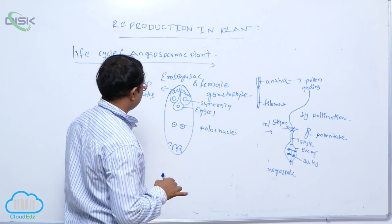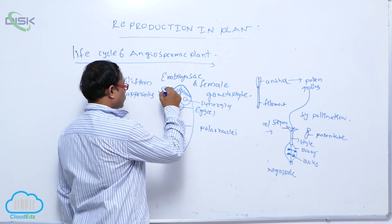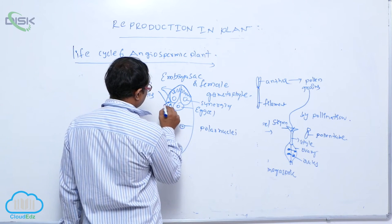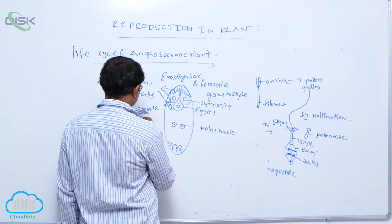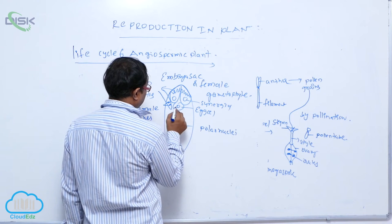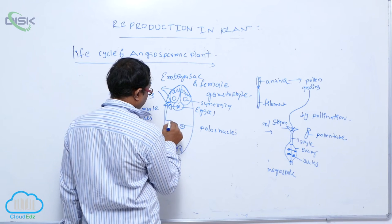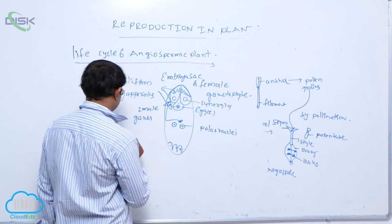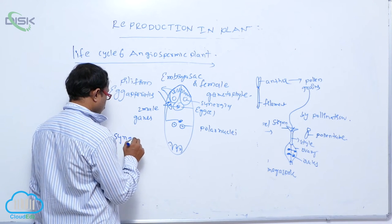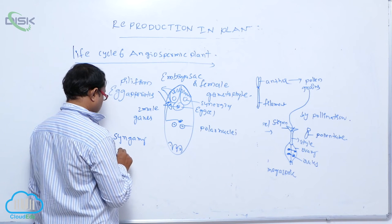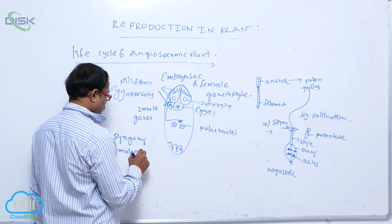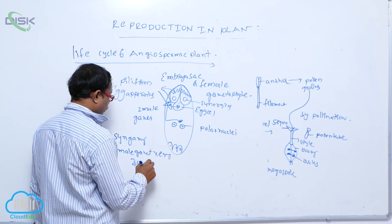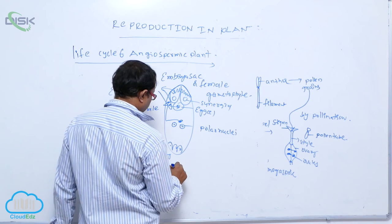At the time of fertilization, the pollen tube enters the embryo sac carrying the male gametes. Two male gametes are present. One male gamete fuses with the egg cell — this is known as syngamy — producing the zygote, which is then converted into the embryo.